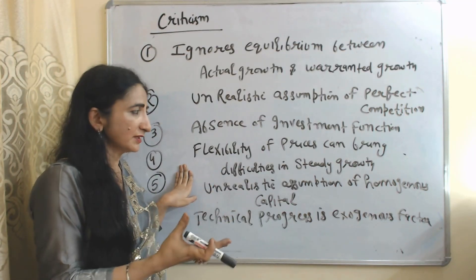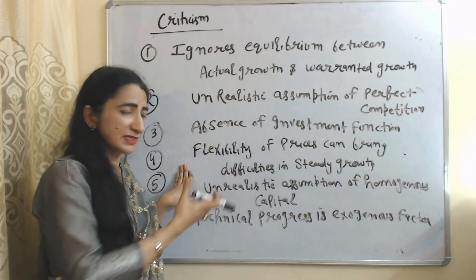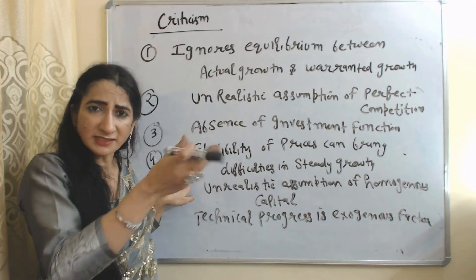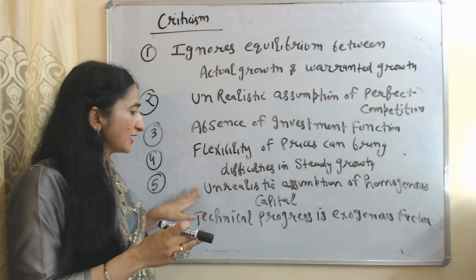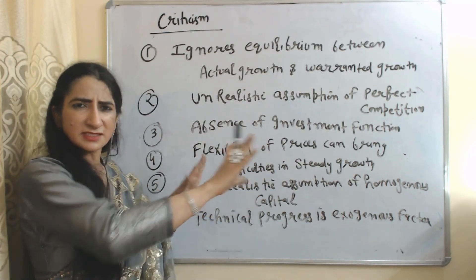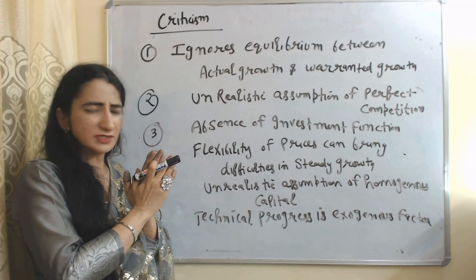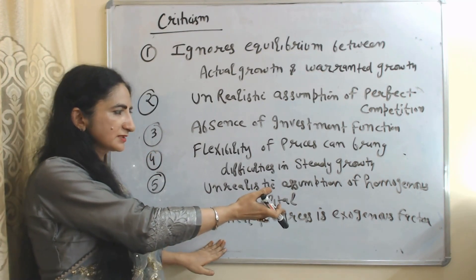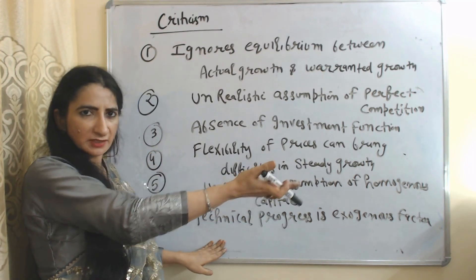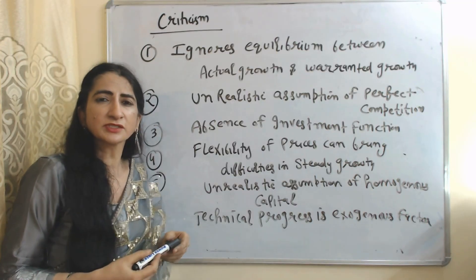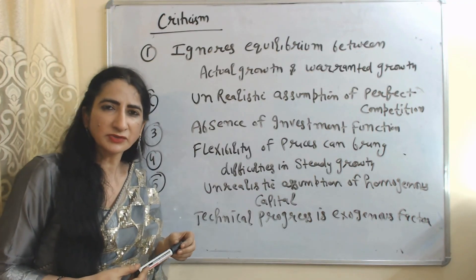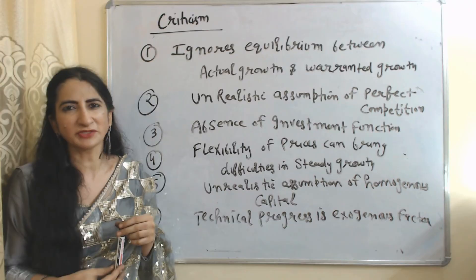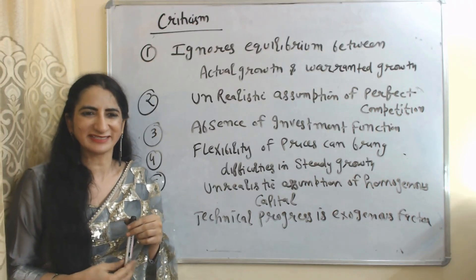Fourth, flexible prices can create difficulties in achieving a steady growth rate. Fifth, the assumption of homogeneous capital is unrealistic. Sixth, the model assumes technical progress is neutral, which is also not true. So this is all about the Solow model. Thank you so much for watching this video. Bye, take care.